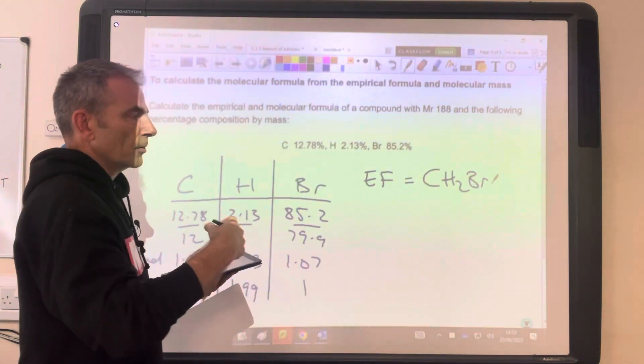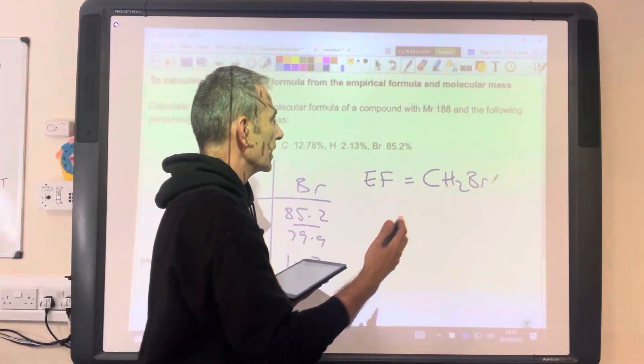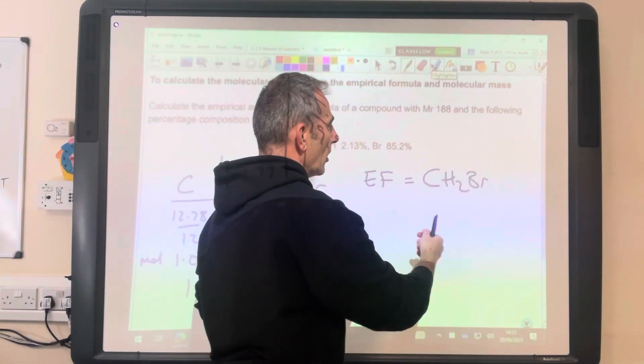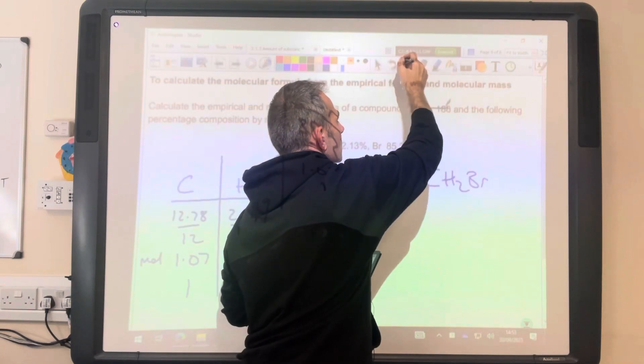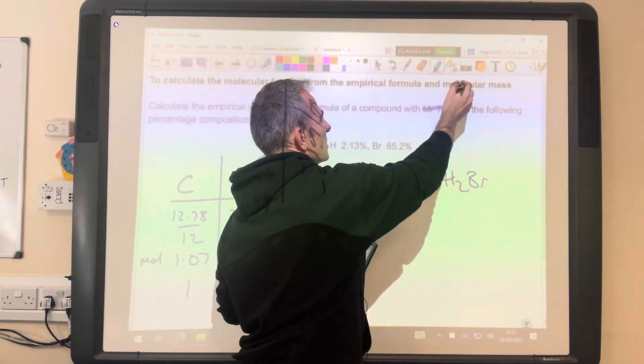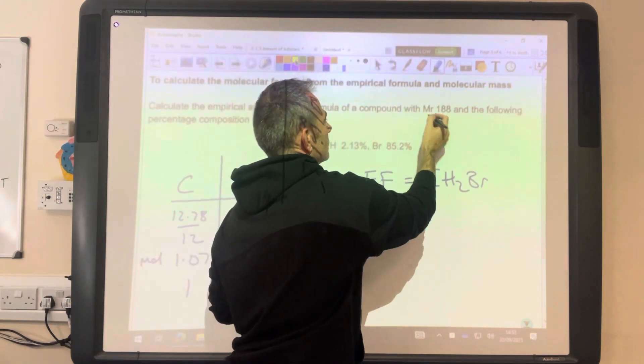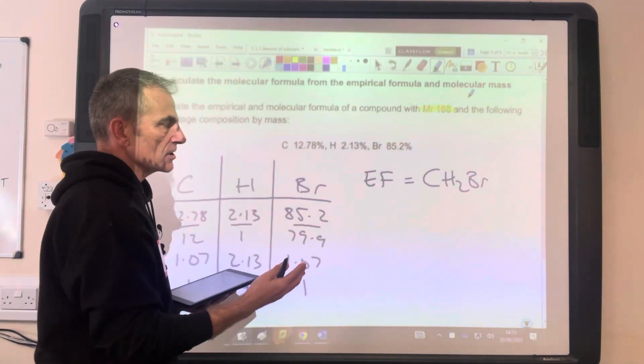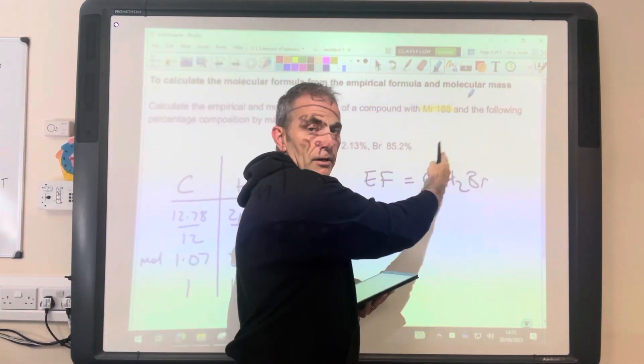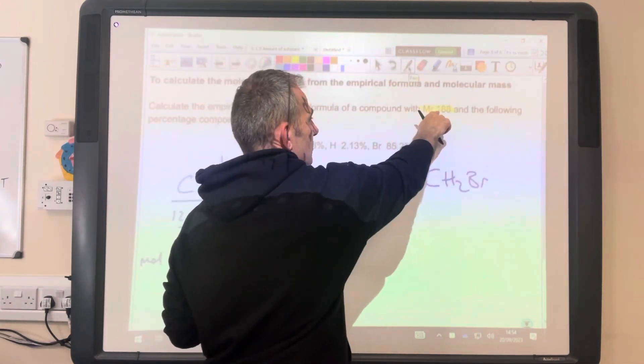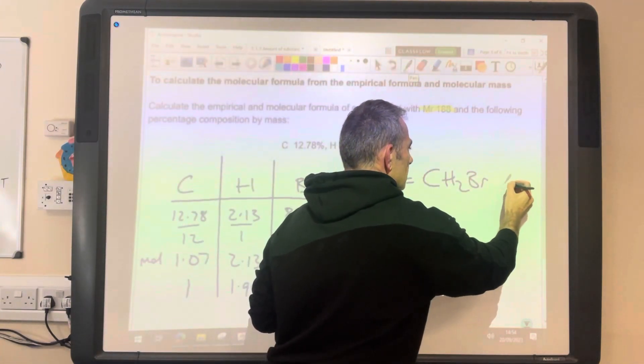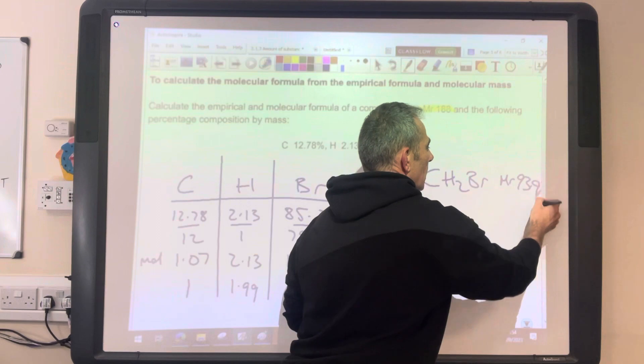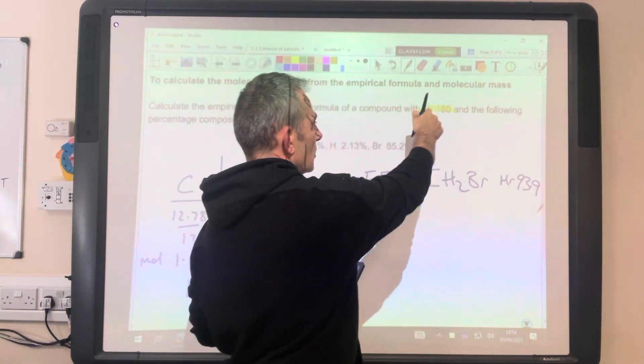So what about the actual formula, the molecular formula? Well, if that was the molecular formula, that would have to have an MR of 188. So it's got to have an MR of 188. So what we're going to do is find the MR of the empirical formula first and see how it compares with that. So the MR of this is 93.9, which is obviously not 188.